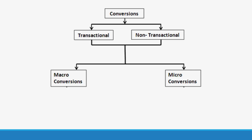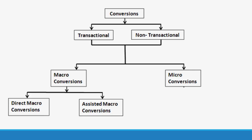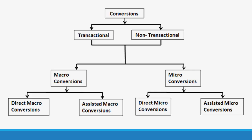Both macro and micro conversions can be further classified into direct and assisted conversions. So we can have two categories of macro conversions: direct macro conversion and assisted macro conversion. Similarly, we can have two categories of micro conversions: direct micro conversions and assisted micro conversions. In the context of Google Analytics, direct macro conversions are those major website goals which are directly achieved by a marketing channel. For example, when a user clicks on a paid search ad and makes a purchase straight away, the paid search marketing channel directly achieved a major website goal, and hence the conversion is referred to as a direct macro conversion in Google Analytics multi-channel funnel reports.